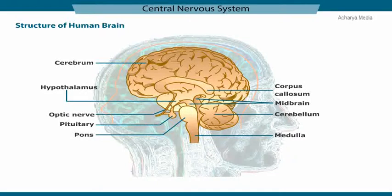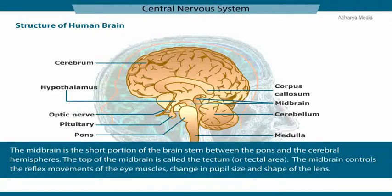The structure of the human brain is as shown. The forebrain consists of the cerebrum, hypothalamus, and pituitary. The hindbrain consists of the cerebellum, pons, and medulla. The midbrain is located in the central part of the human brain, and the mid and hindbrain form the brain stem. The midbrain is the short portion of the brain stem between the pons and the cerebral hemispheres, and the top of the midbrain is called the tectum or tectal area.